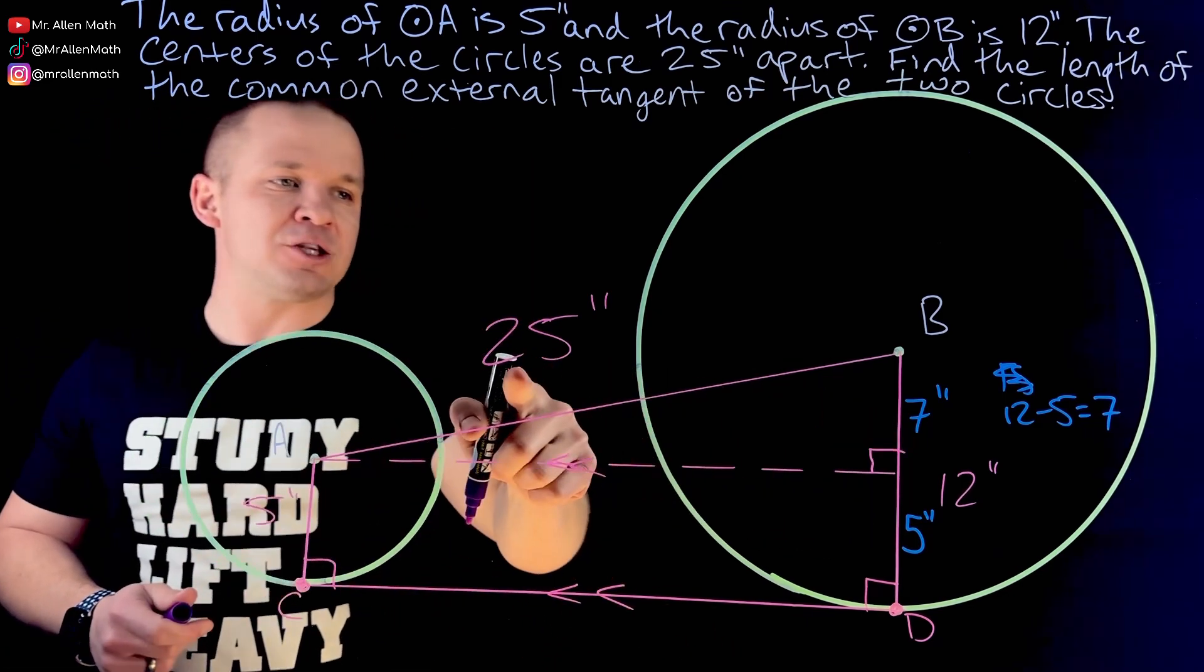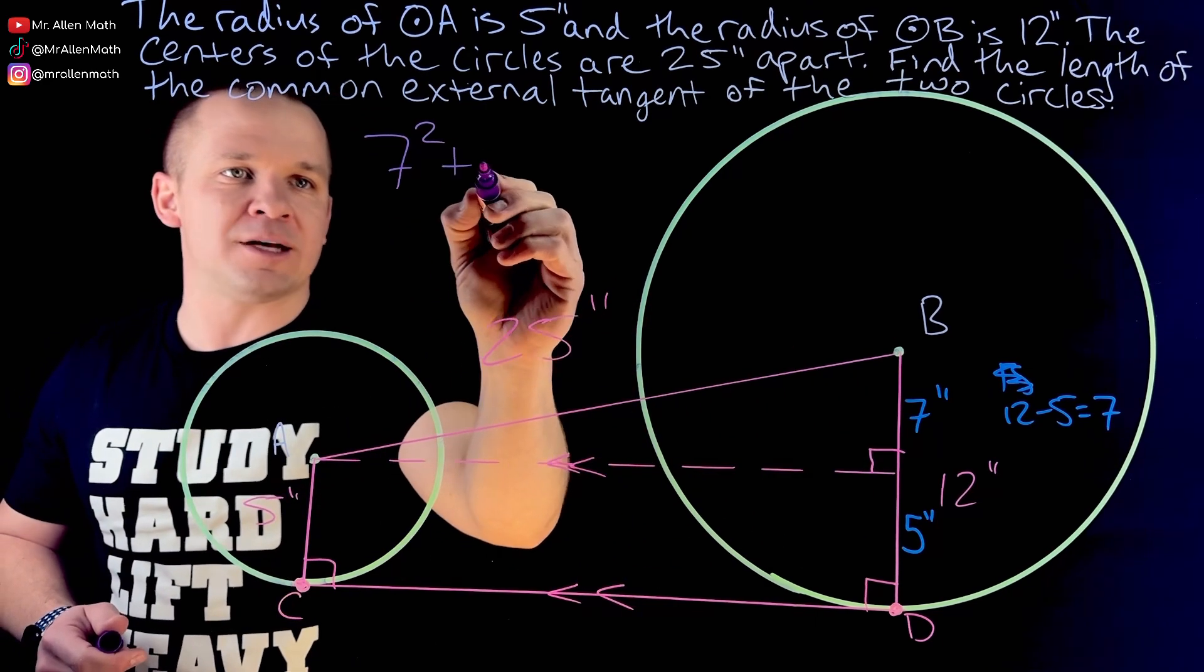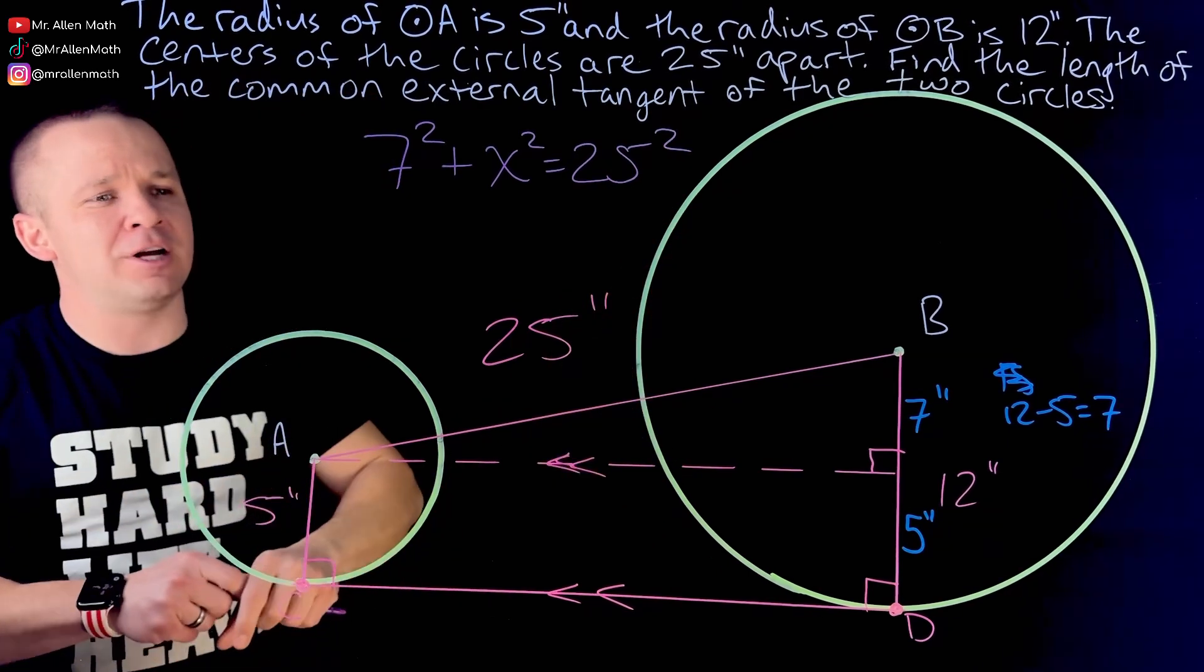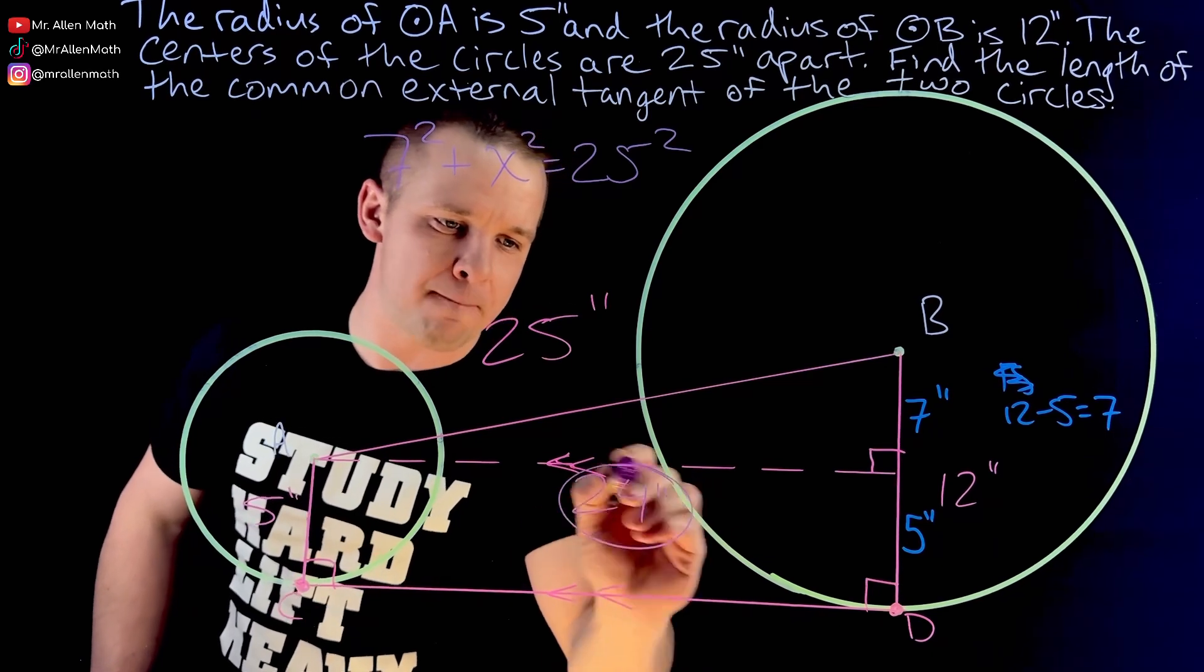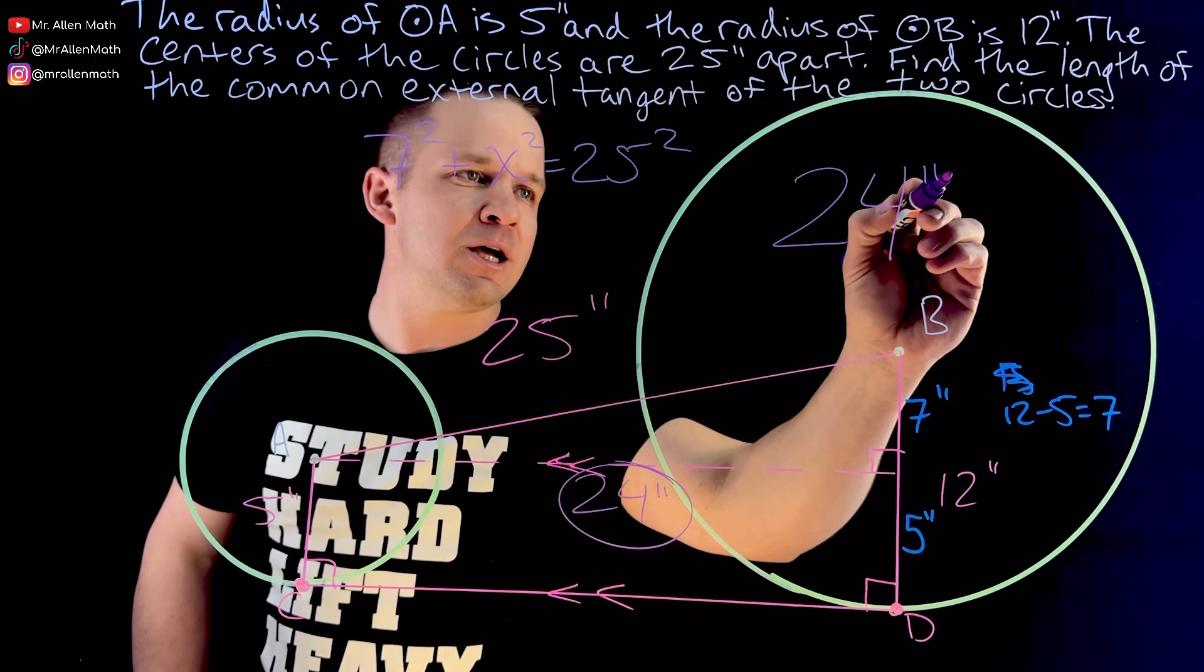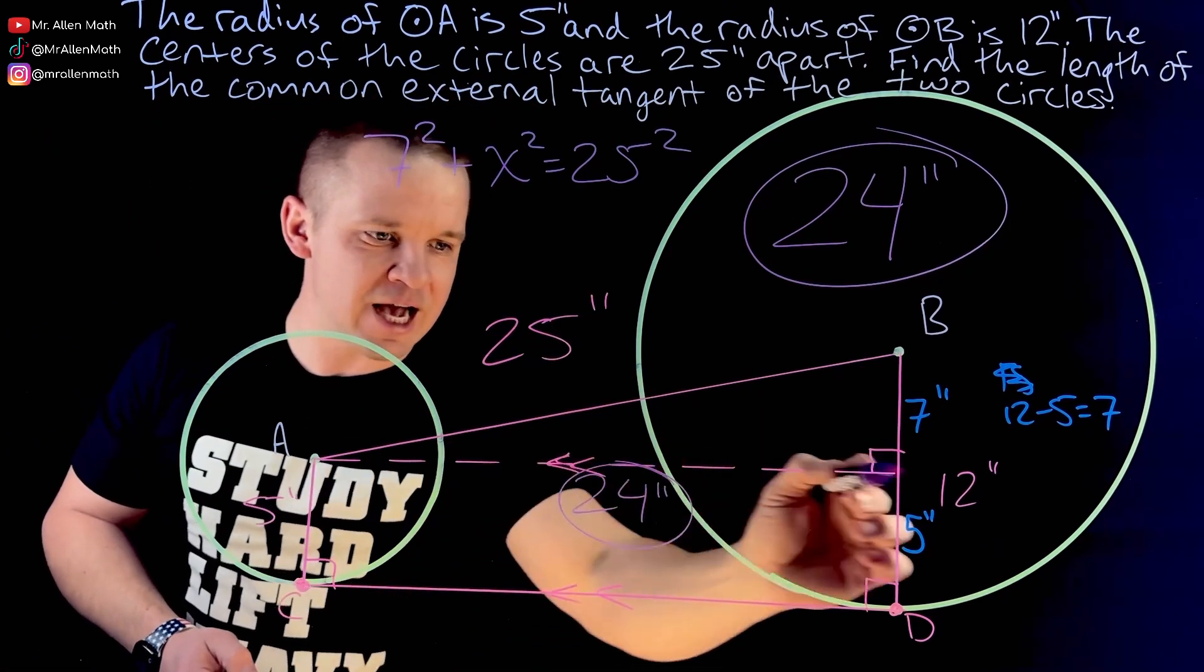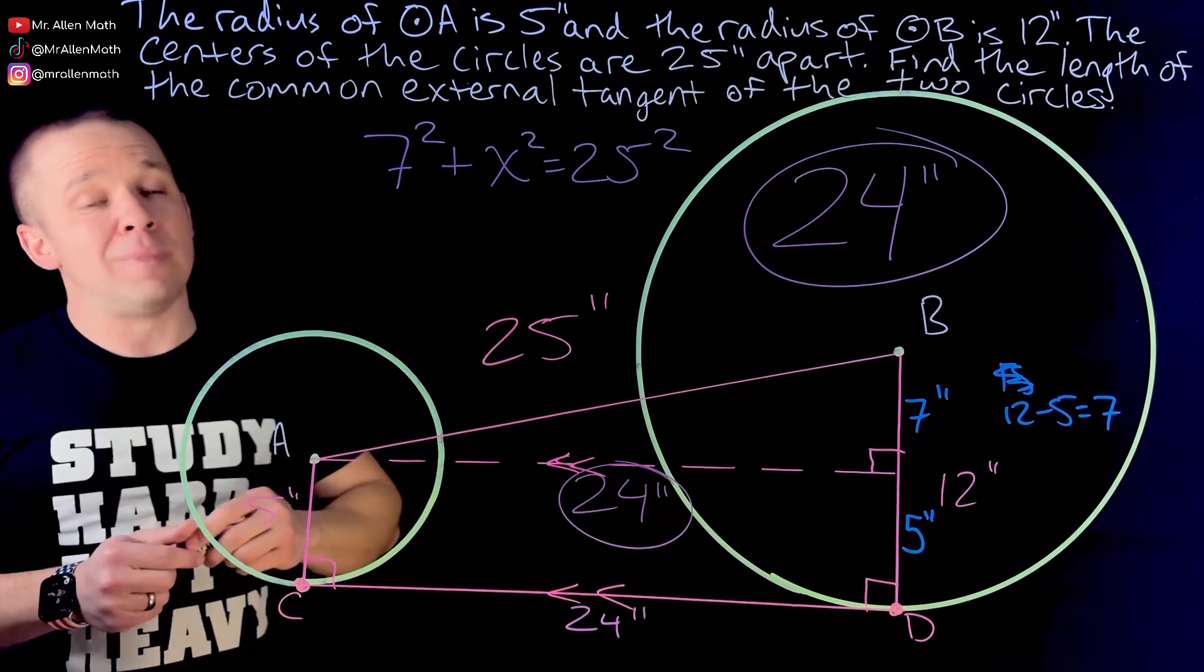So now I've got seven. I've got 25. I've got Pythag going on. You can do seven squared plus X squared equals 25 squared. But if you know your Pythagorean triples, you know this bad boy is 24 inches right there. Boom. So my answer is 24 inches for my common external tangent of the circle, because this length right here of the dashed line is the same as this length right here.